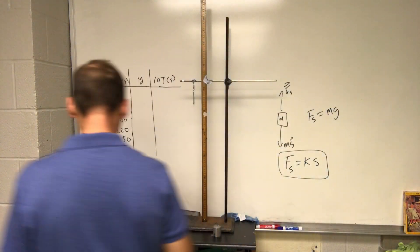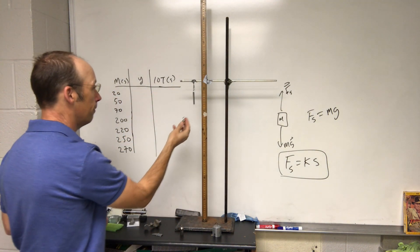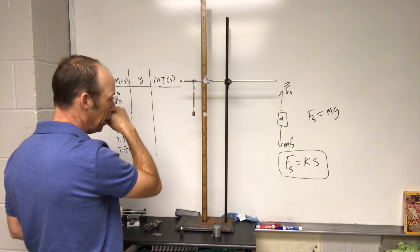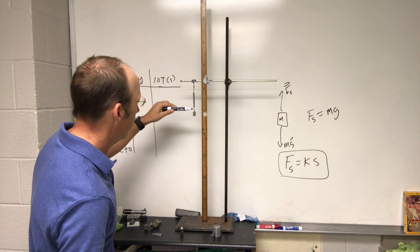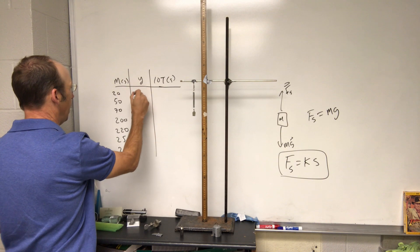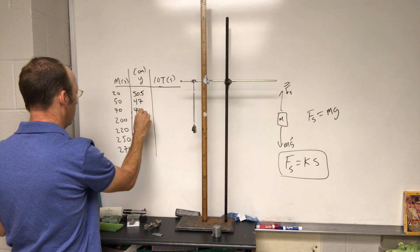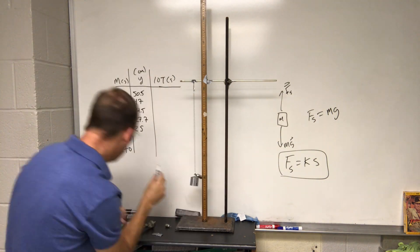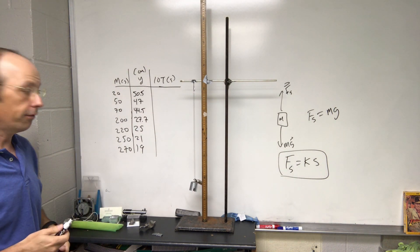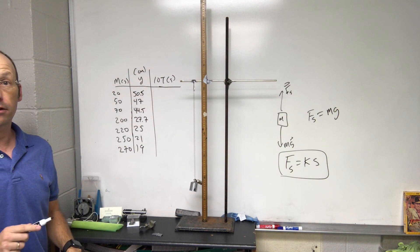So the stretch and the force are proportional. Let's start taking some data. I have my little data table, I have a little mass I'm going to hang here, and I'm going to measure the position from the top. I'm going to get a rough estimate — it's moving a little bit — I'll say 50.5. This is in centimeters. It's not perfect but it's good enough, and we're going to make a graph to find the spring constant.